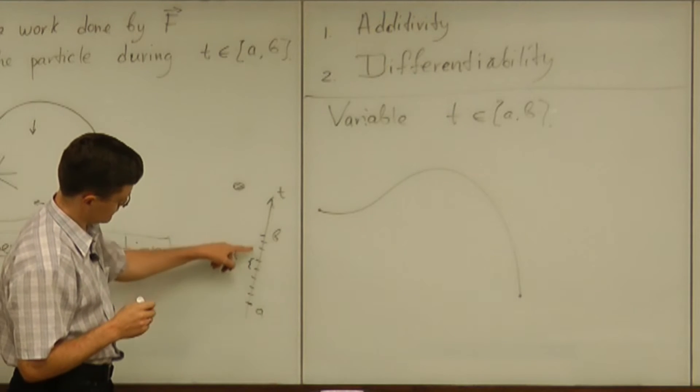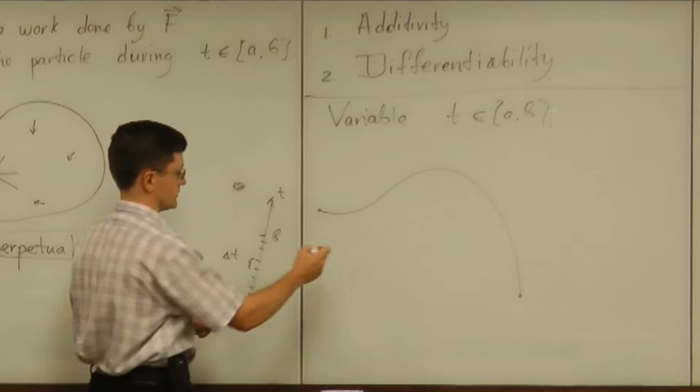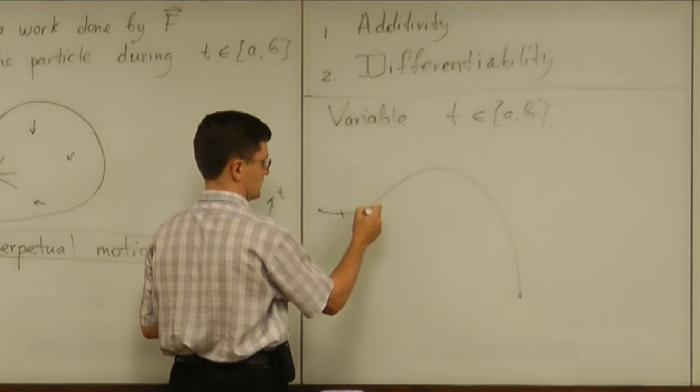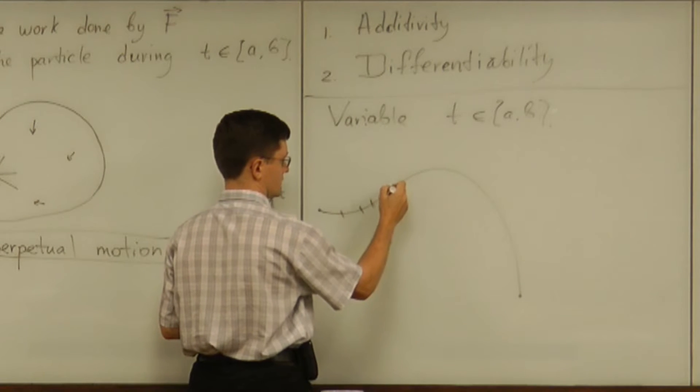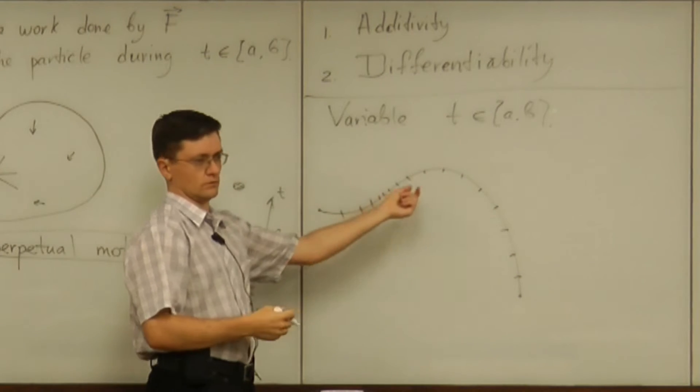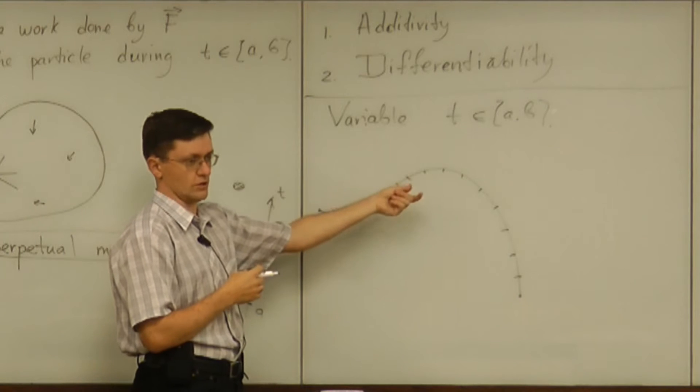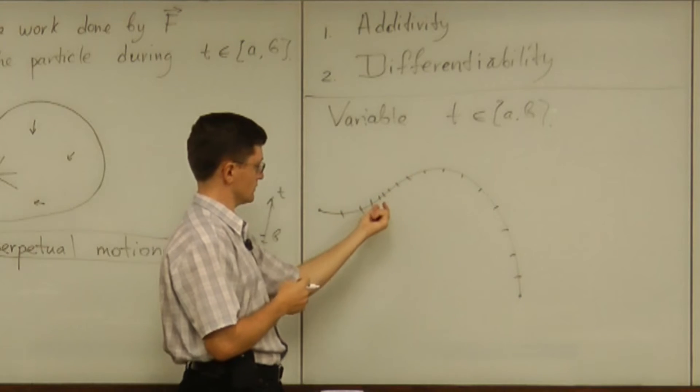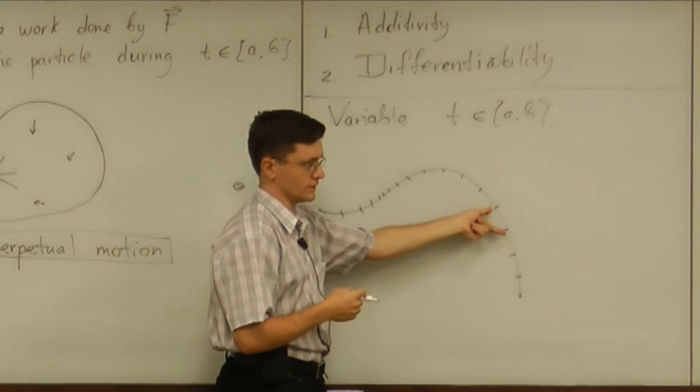And then that subdivision produces subdivision of this path. And of course this subdivision of the path may not be into equal pieces because the speed can change. Right? The particle can move slow here and quickly there.